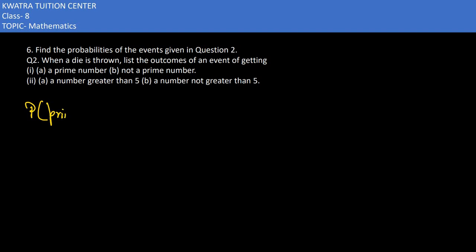We need to find the probability of getting a prime number. Now we know the die, we know the outcomes of the die: 1, 2, 3, 4, 5, 6. Six outcomes, so the total is 6.